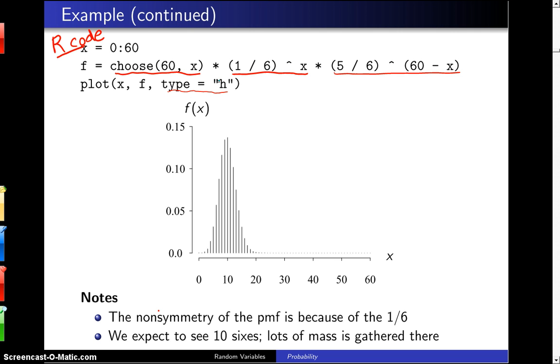A couple things to notice about the probability mass function. First of all, it is non-symmetric because our probability of rolling a six is one-sixth. And second of all, if we had to guess how many sixes will appear, you would guess 10 sixes, and lots of mass is gathered around that point. Later on we'll define something known as the population mean, and 10 in this case is the population mean.